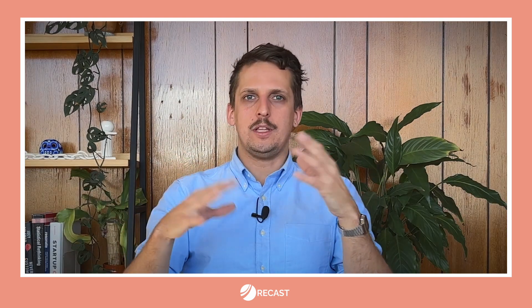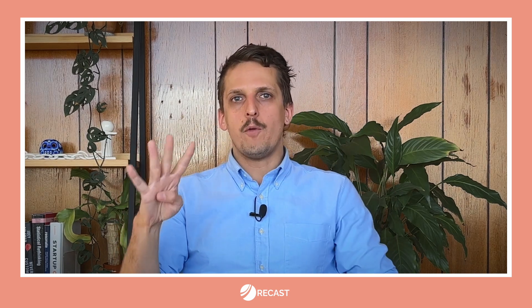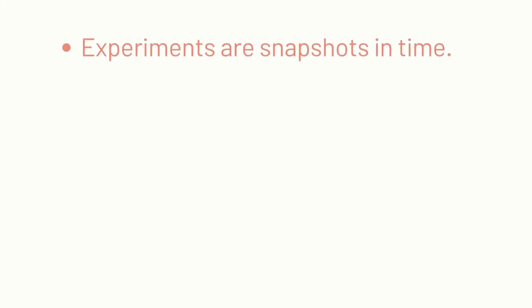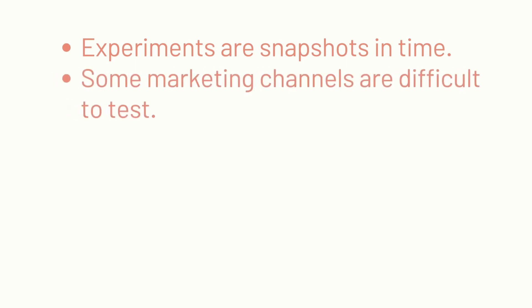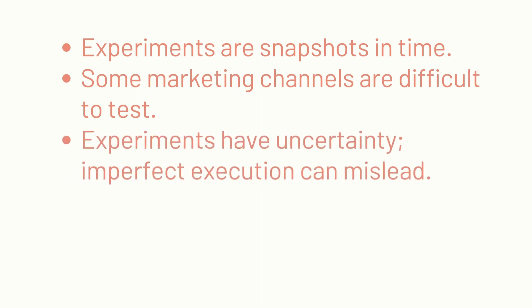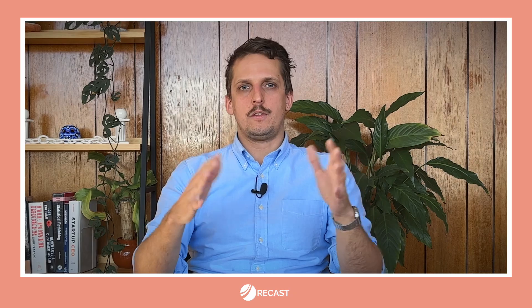Before we move on, it's important to talk about the limitations of using lift tests and experiments to validate MMMs. There are four main limitations you should be aware of. First, experiments are snapshots in time and may not apply to the entire time period you're analyzing with your MMM. Second, some channels are impossible or very difficult to test with experiments. Third, experiments have uncertainty and unless they're perfectly run, they can actually lead you astray. And fourth, while experiments can estimate average lift for a certain level of spend, it can be difficult to validate other parameters relative to the marketing mix model. Let's talk about the implications of each of those issues.